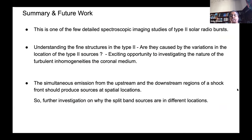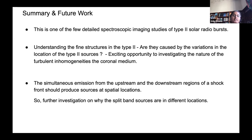My summary: this is one of the few detailed spectroscopic imaging studies done for type 2 solar radio bursts. One part of future work is to further investigate the fine structures in the type 2 region and why they are caused — are they caused by variation in the location of type 2 sources? If so, we'll try to quantify those variations and understand the nature of coronal turbulence.